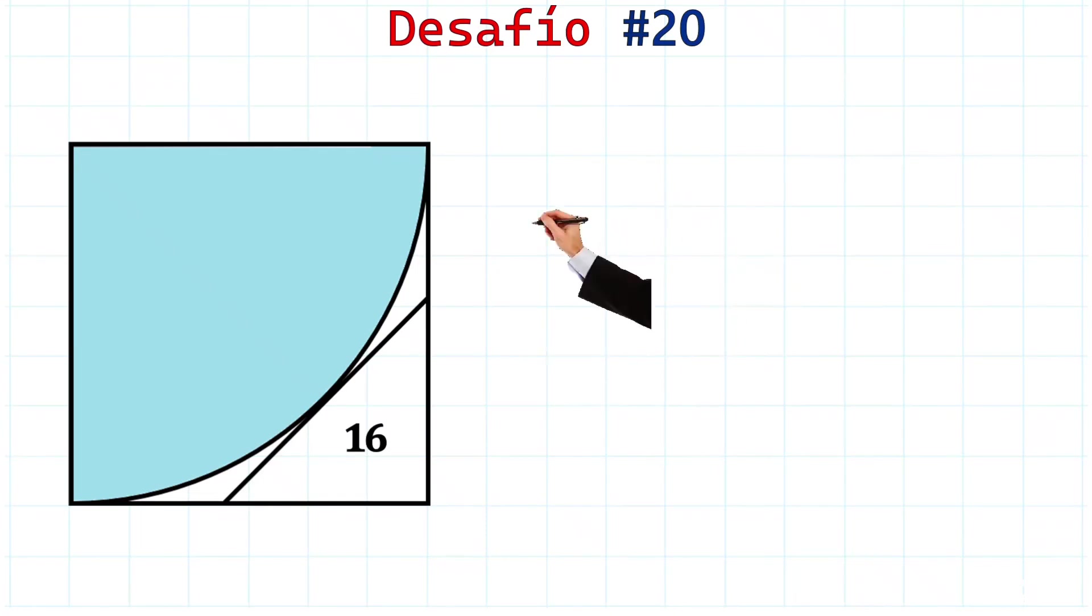Ladies and gentlemen, check out this interesting exercise. We need to find the shaded area of this figure. What we have is a square, a quarter circle, and an isosceles right triangle.